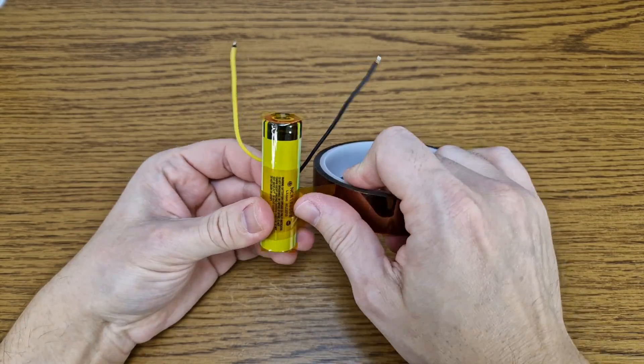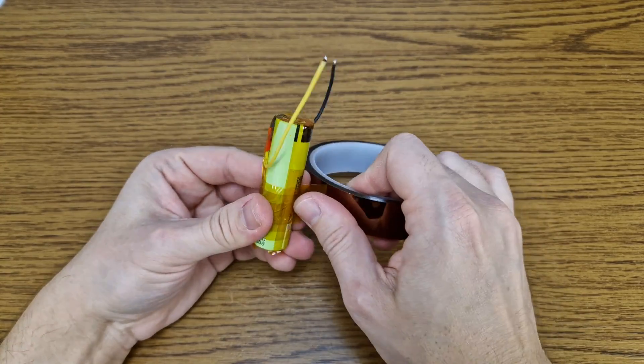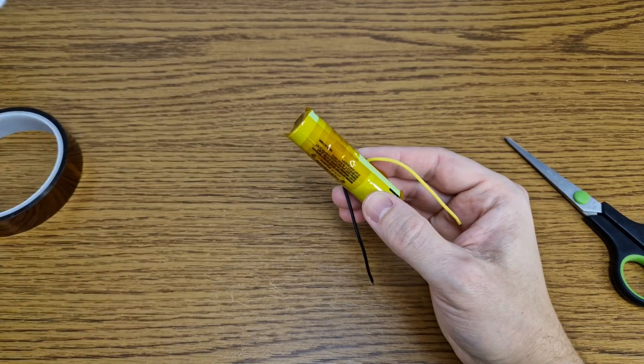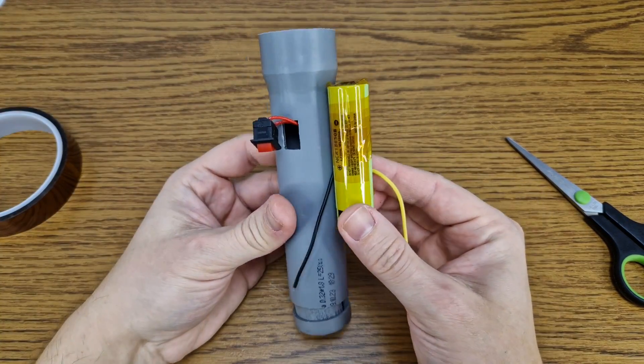I soldered some wires to the nickel strips, and I will cover the cell with kapton tape, just to be sure the cell housing, which is the negative terminal, will never make contact with the switch pins.